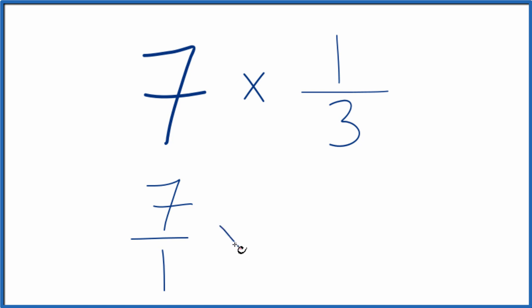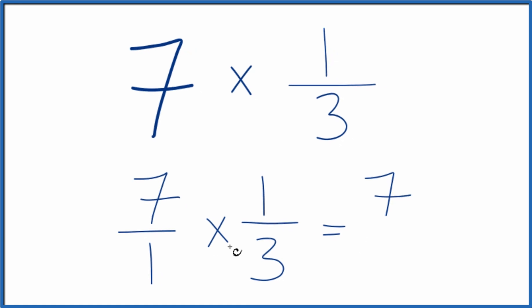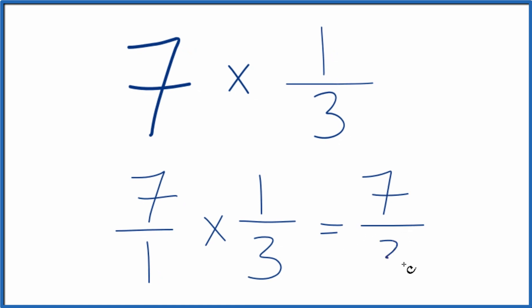We can multiply our fraction seven over one times one-third, and when we multiply fractions, we multiply the numerators, then the denominators. Seven times one is seven. One times three, that's three.